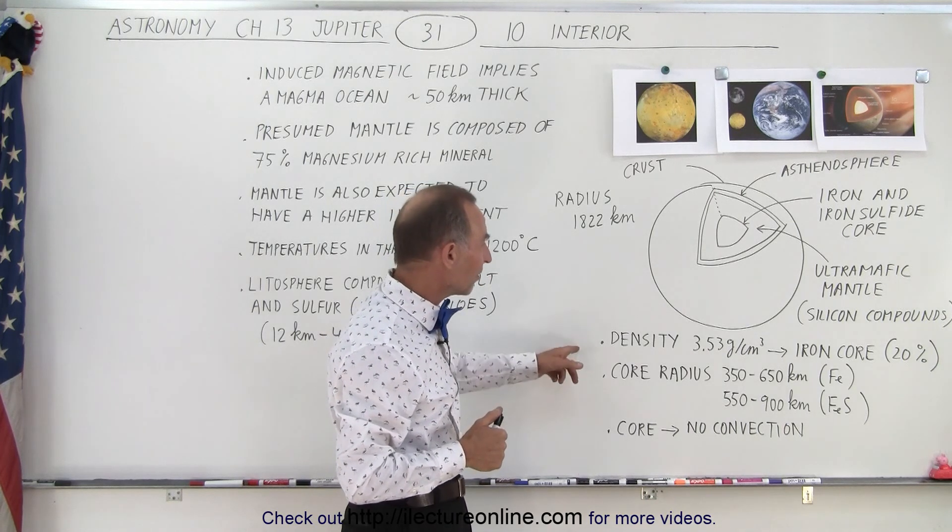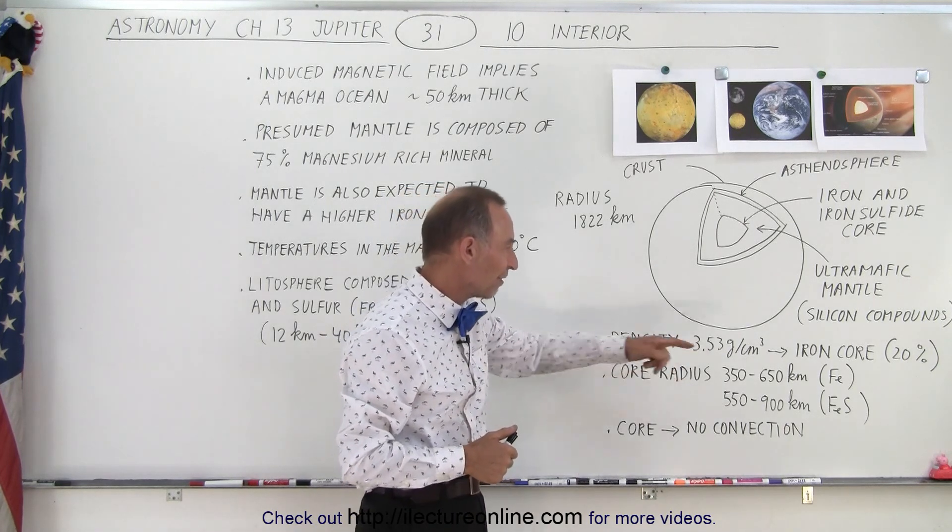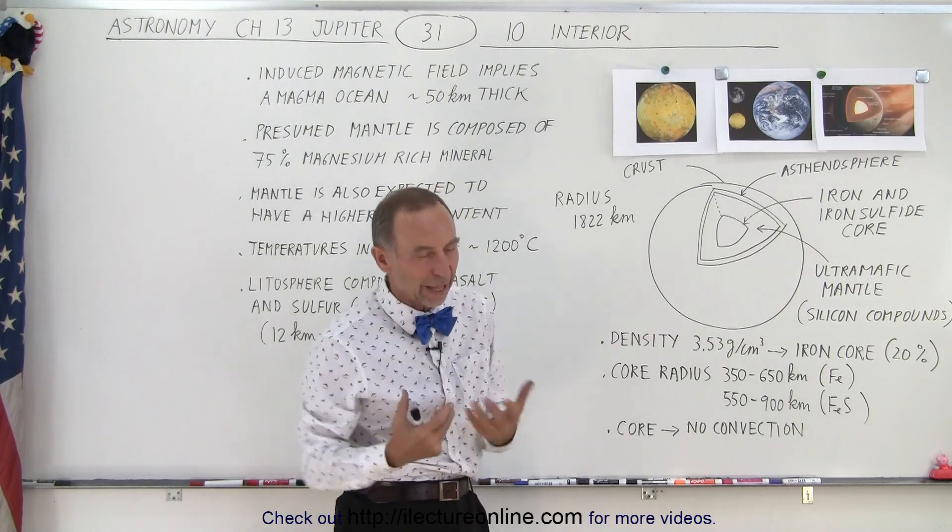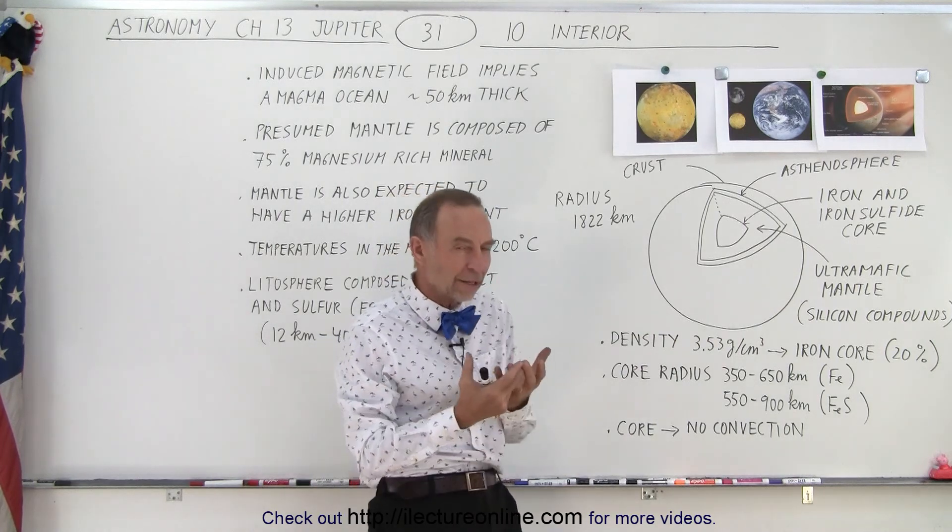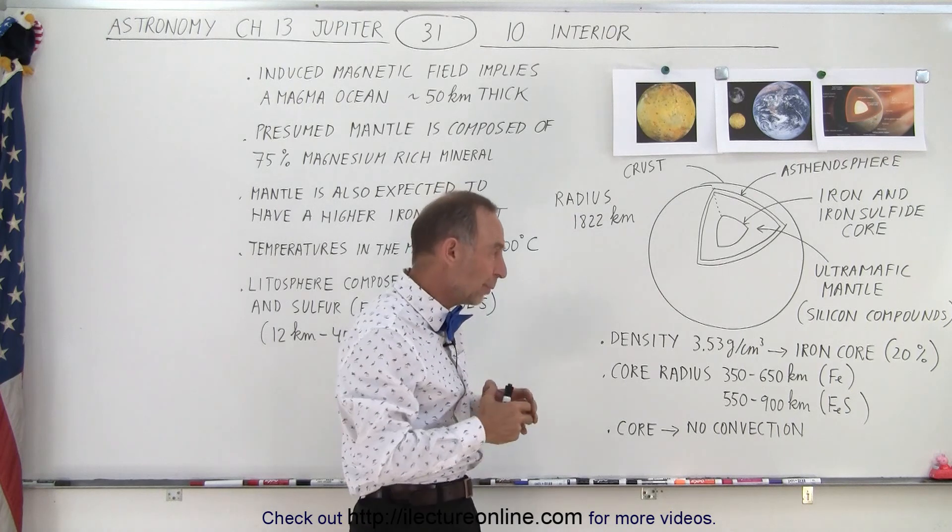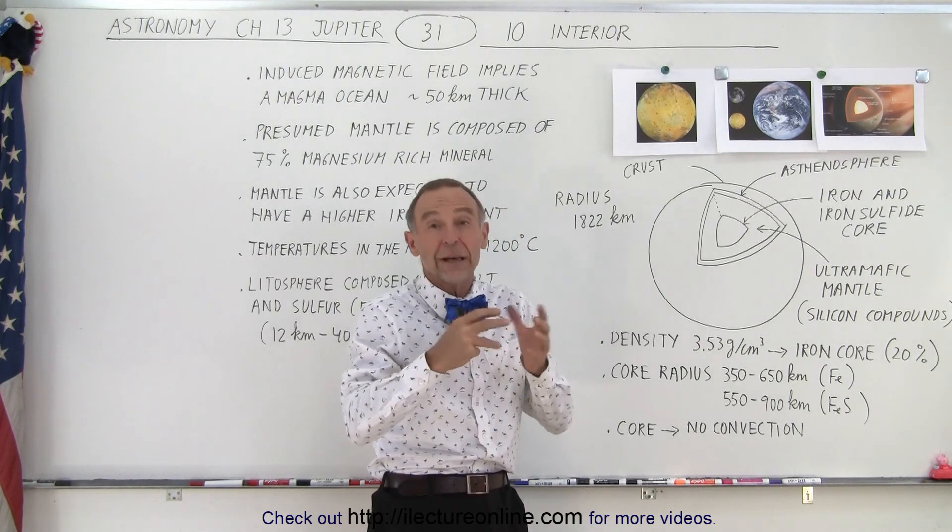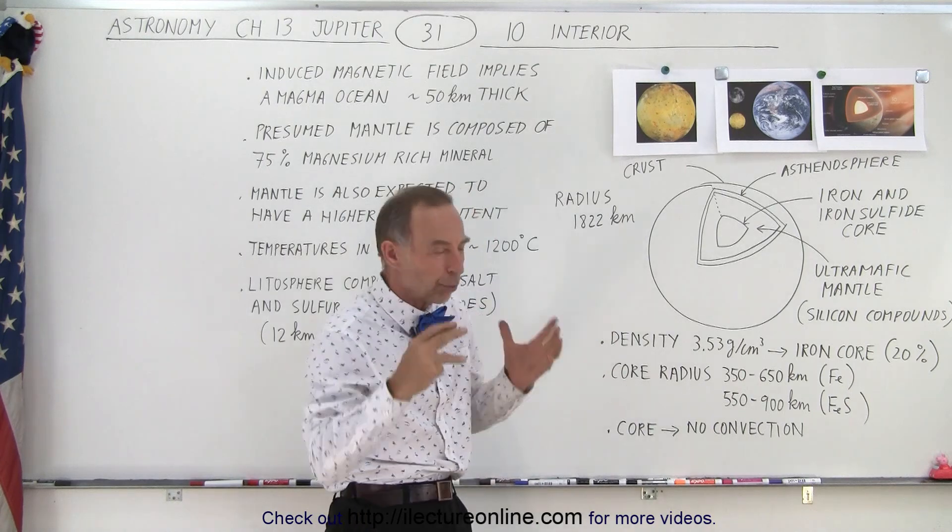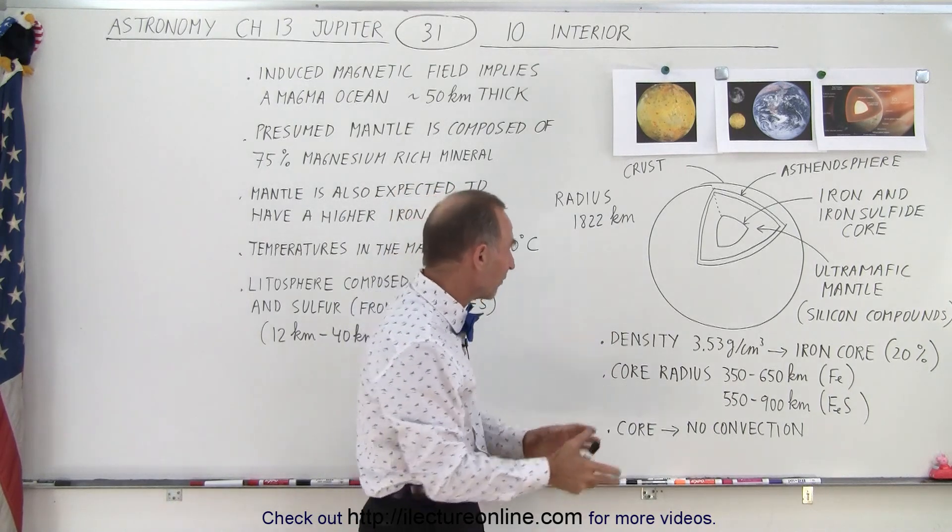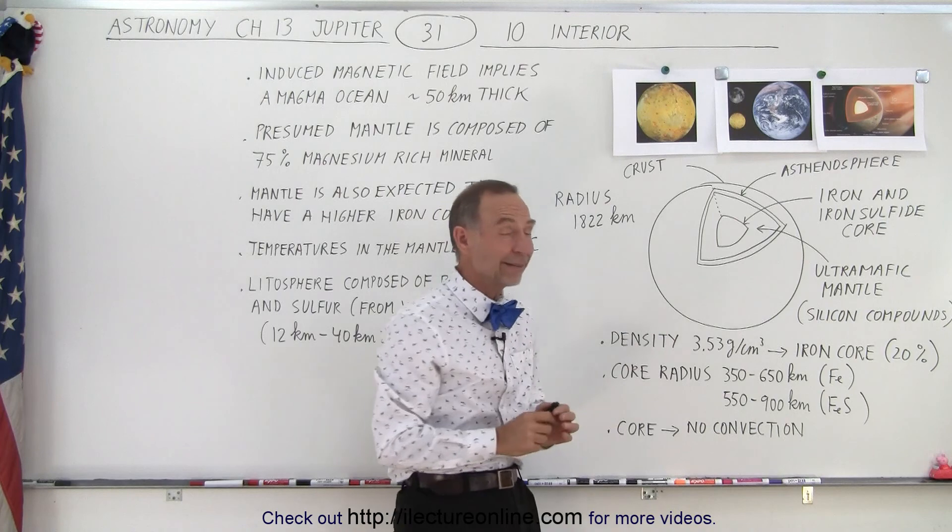The density of the moon is about 3.5 grams per cubic centimeter, and from that we can calculate that there's a certain amount of iron that must exist in the core. We estimate that the core makes up about 20% of the total mass of the moon, and that would give it about the approximate correct density.